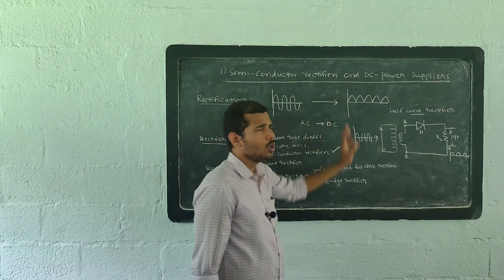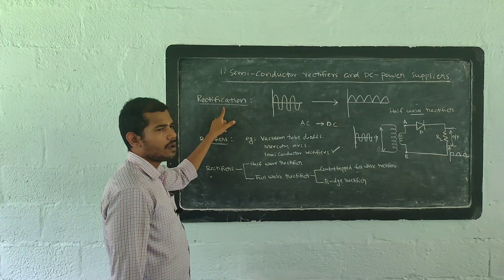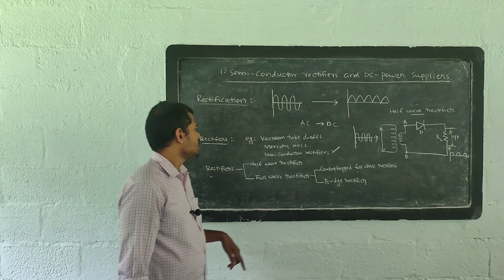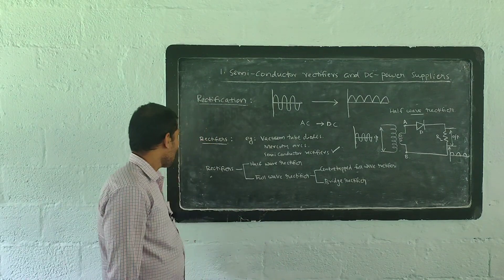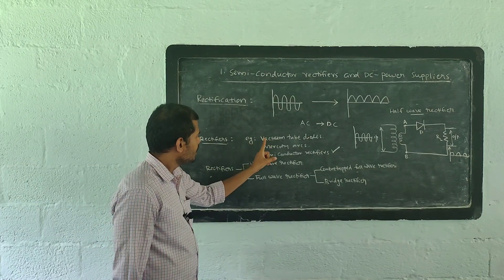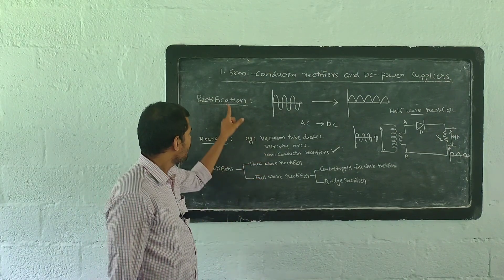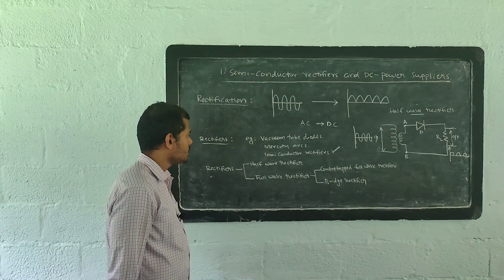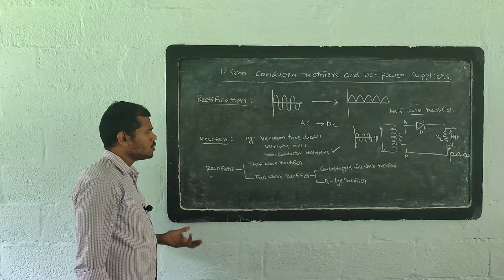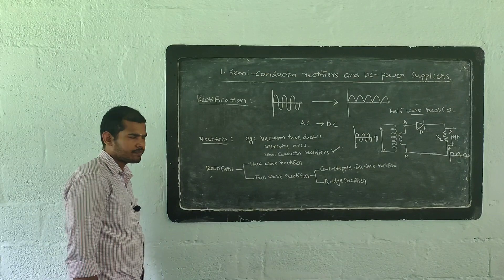The process by which we convert alternating current into direct current is known as rectification. We use some electronic circuits for this process. Such electronic circuits which perform rectification are known as rectifiers. In older days we used vacuum tube diodes and mercury arcs as electronic circuits for rectification. But nowadays we use semiconductor diodes for rectification. Such electronic circuits consisting of diodes are known as semiconductor rectifiers or semiconductor diode rectifiers.